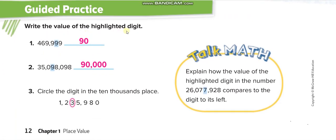Now: 'Write the value of the highlighted digits.' The highlighted digit is 9. Counting the place values — ones, tens, hundreds, thousands, ten thousands — this 9 is in the tens place, so its value is 9 times 10 equals 90. Another example: 9 in the ten thousands place means 9 times 10,000 equals 90,000. Then: 'Circle the digit in the ten thousands place' — counting up, ones, thousands, hundred thousands, ten thousands — that's the ten thousands digit.